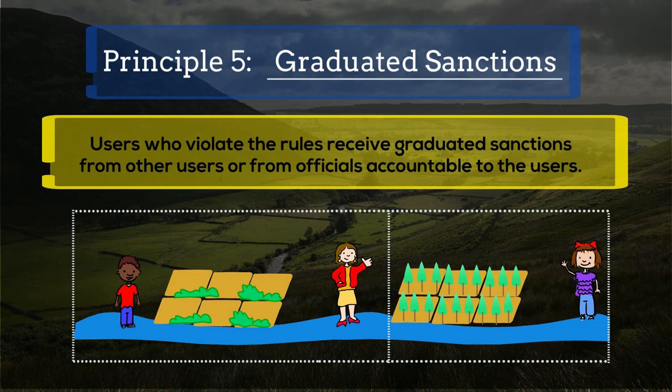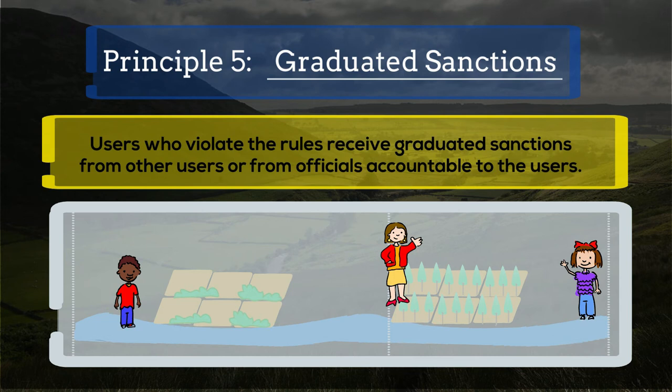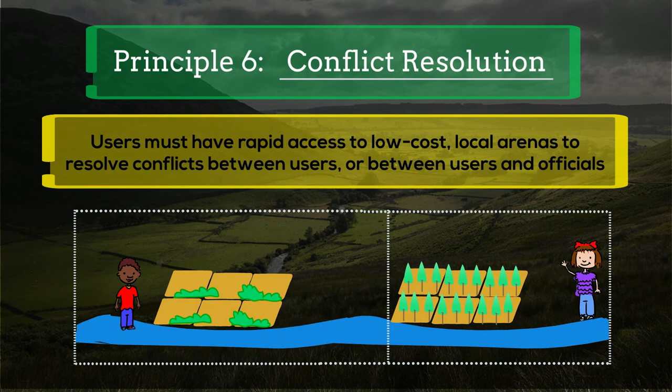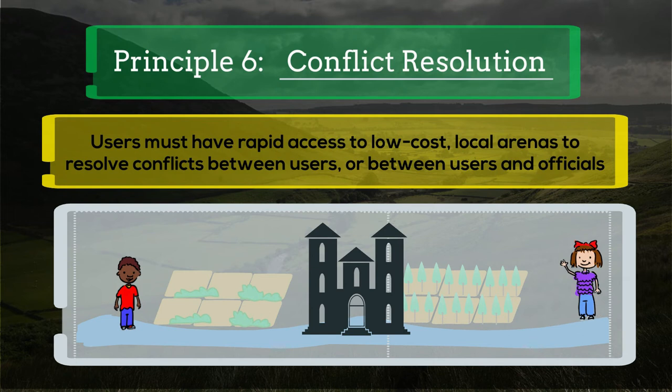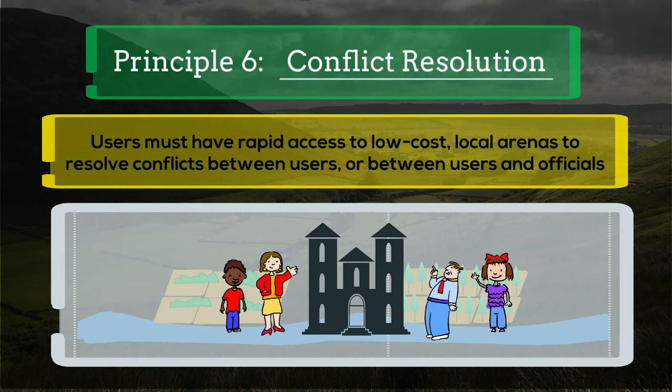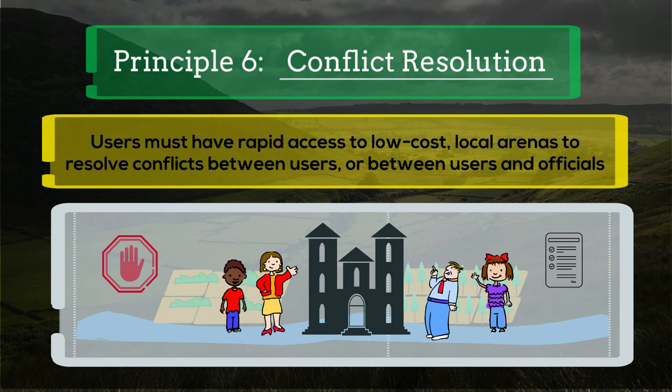Principle 6: Conflict Resolution. Many successful communities have accessible, low-cost, local arenas to resolve conflicts among resource users or between users and other officials. Having such mechanisms allows members to discuss and resolve what is or isn't a rule and which actions are permitted and which are not. It also allows for individuals who make honest mistakes to make up for their lack of performance in a fair and acceptable manner.